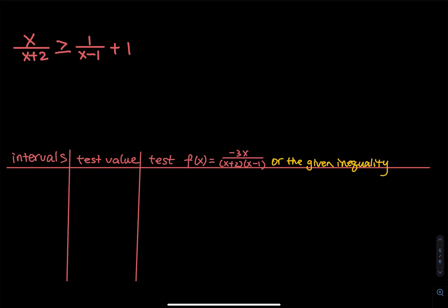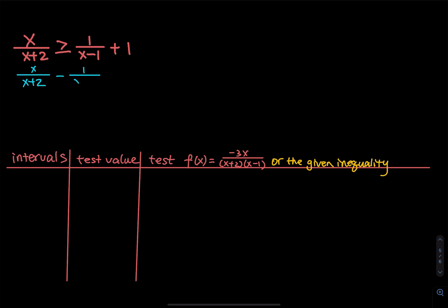This is another rational inequality — we have a fraction greater than or equal to a fraction plus 1. The first step, just like a nonlinear inequality, is to move all the terms to the left-hand side. So we have x divided by x plus 2, minus 1 divided by x minus 1, and then we subtract 1, with everything greater than or equal to 0.